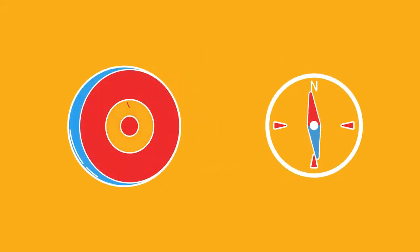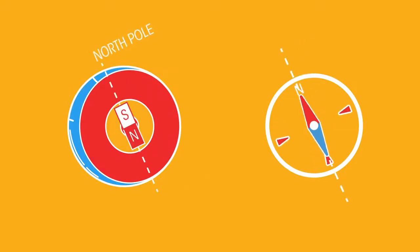As the Earth is a giant magnet, the compass and the Earth act as any two magnets do. The north pole of the compass is attracted to the south magnetic pole of the Earth.